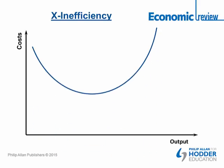Let's take this average total cost curve. What do we assume along this cost curve? We assume that at every output, the firm is using the minimum cost method of producing that output — in other words, the cheapest method possible. That's something students don't necessarily think about when they look at these curves.